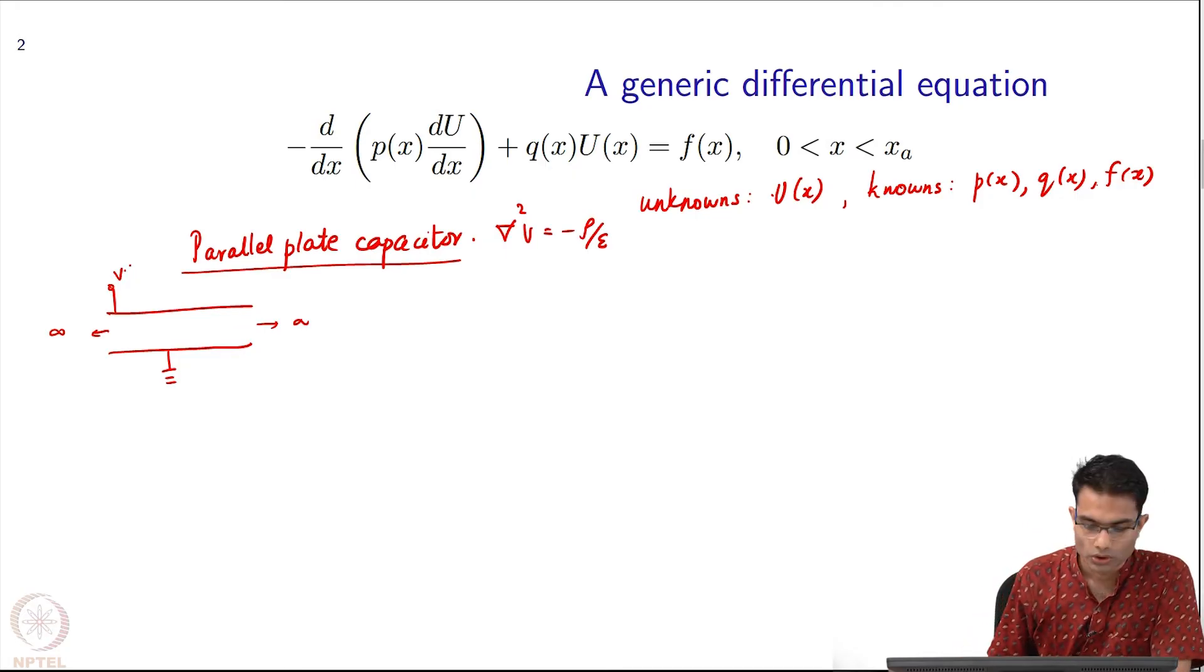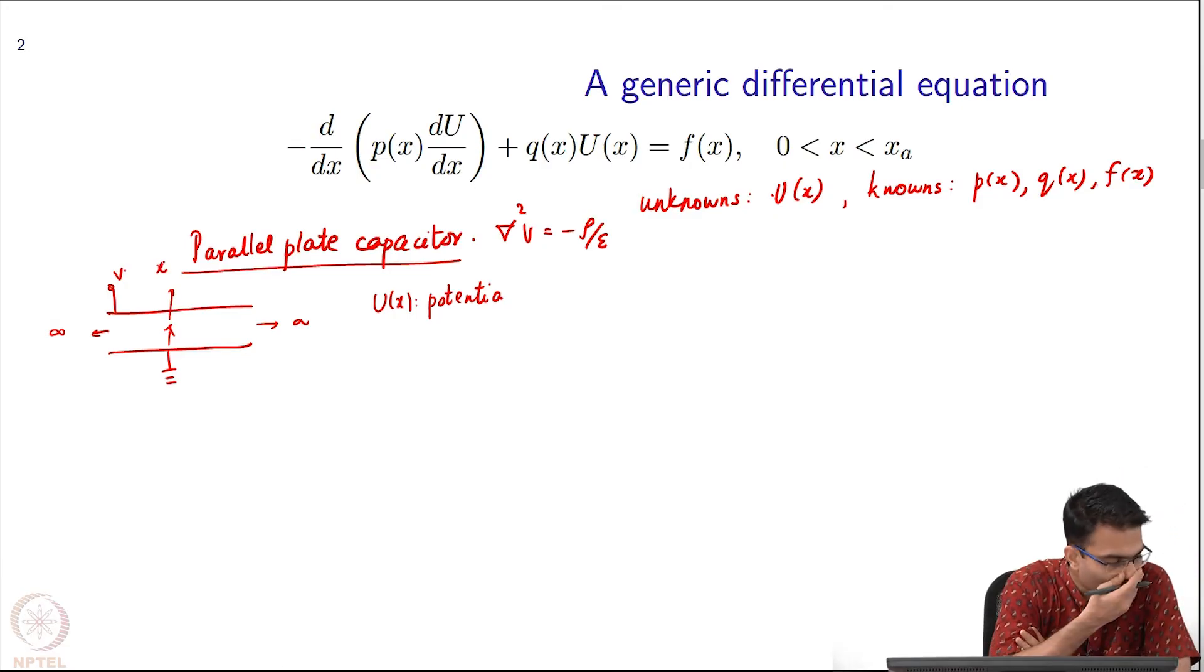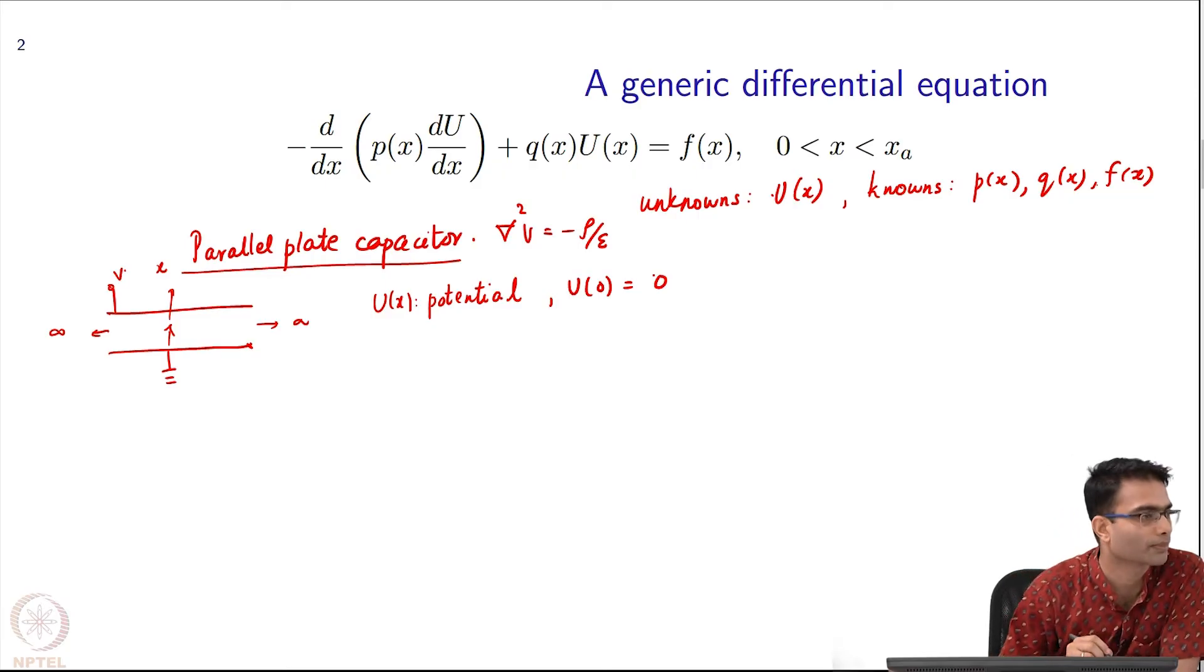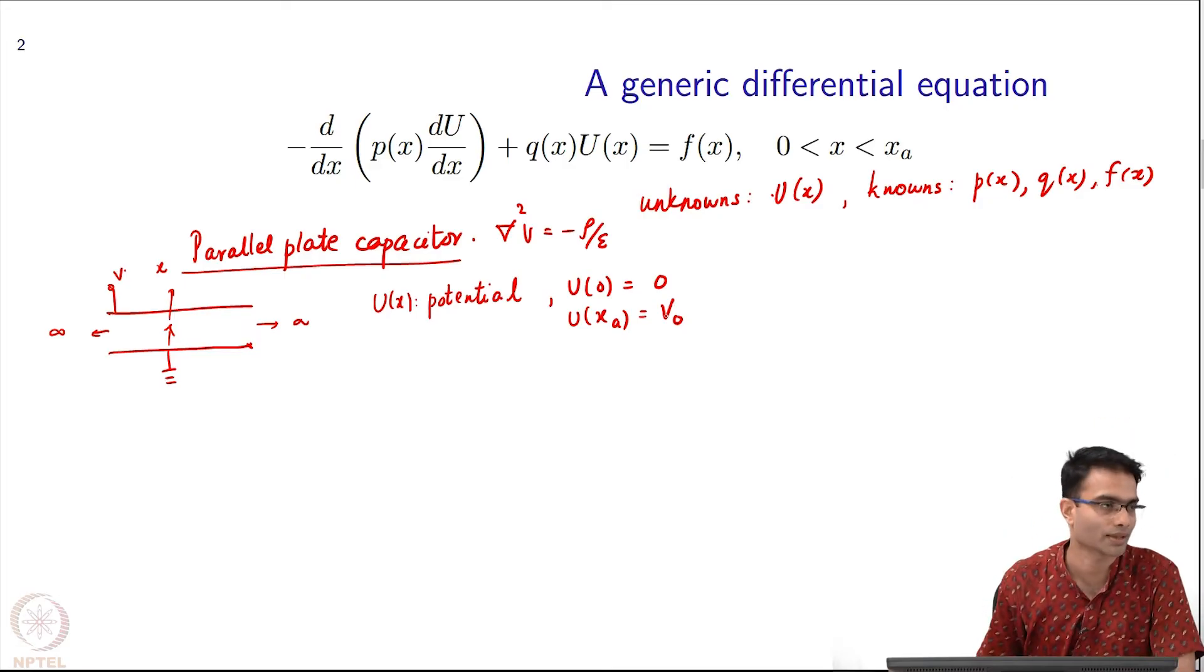You want to solve a problem like this. Over here, u of x is the potential. This is your x. The potential at this point: u of 0 is going to be 0, it's a grounded plate. The upper plate is maintained at some voltage V naught. You want to find out how does the potential vary as I go through the capacitor.